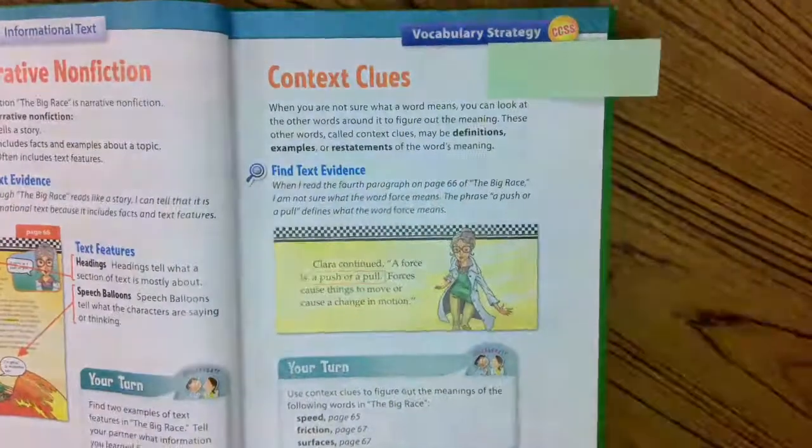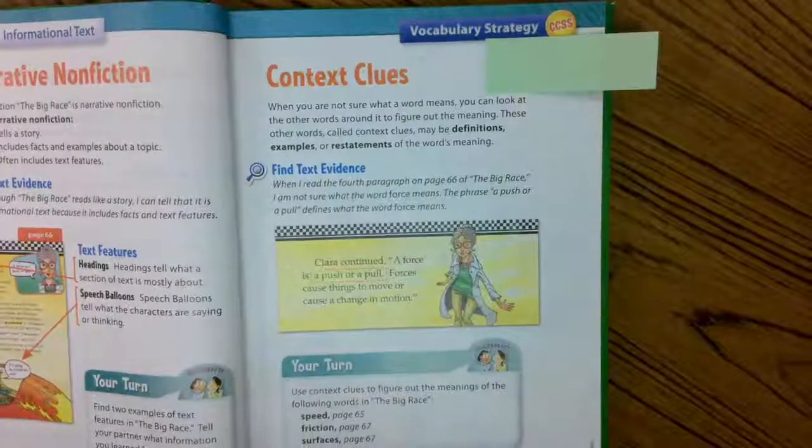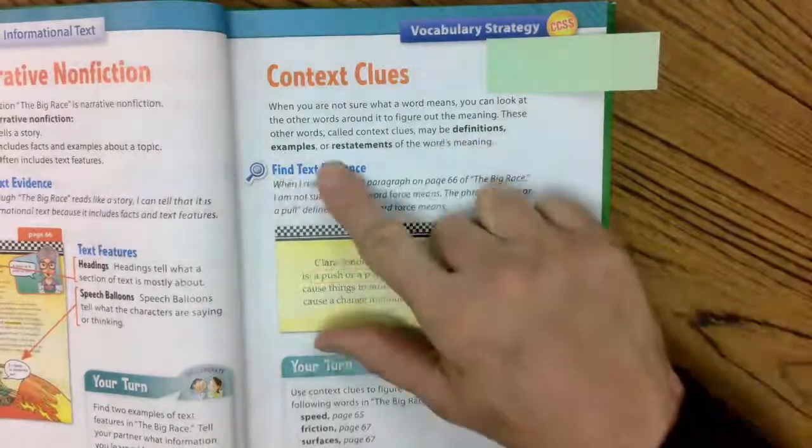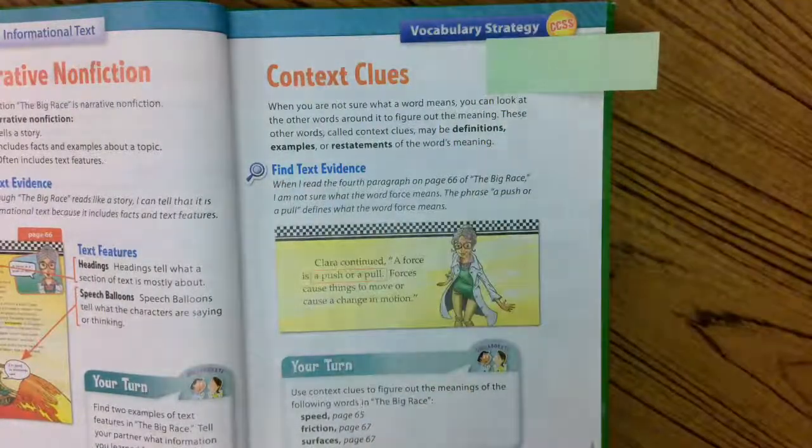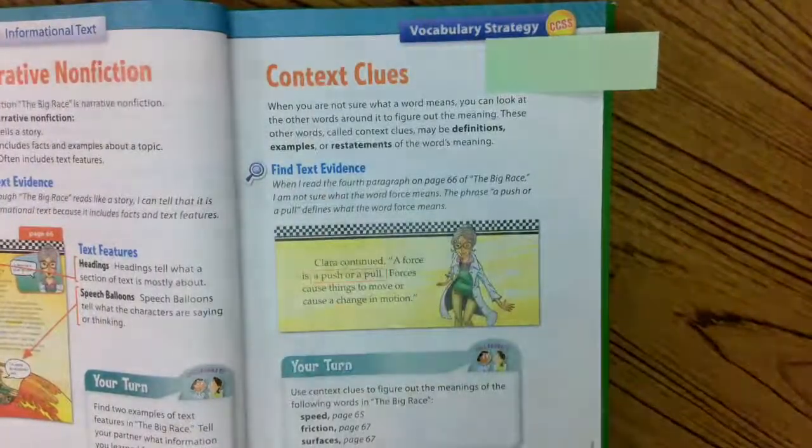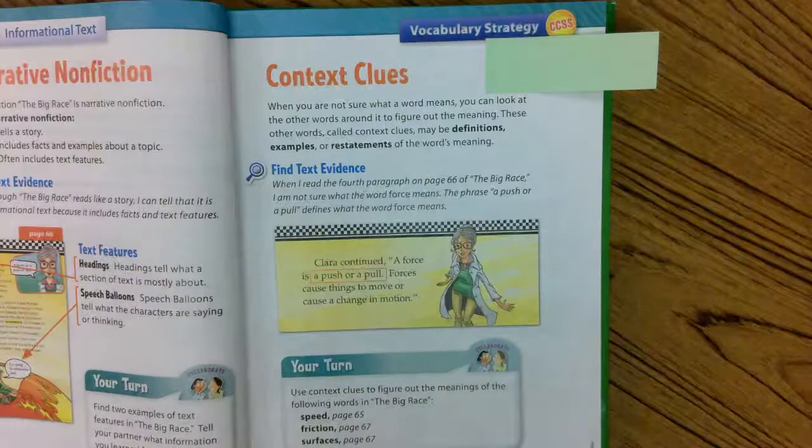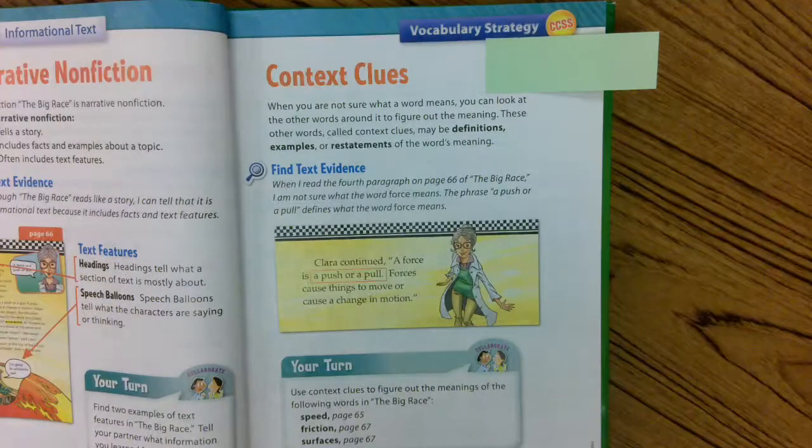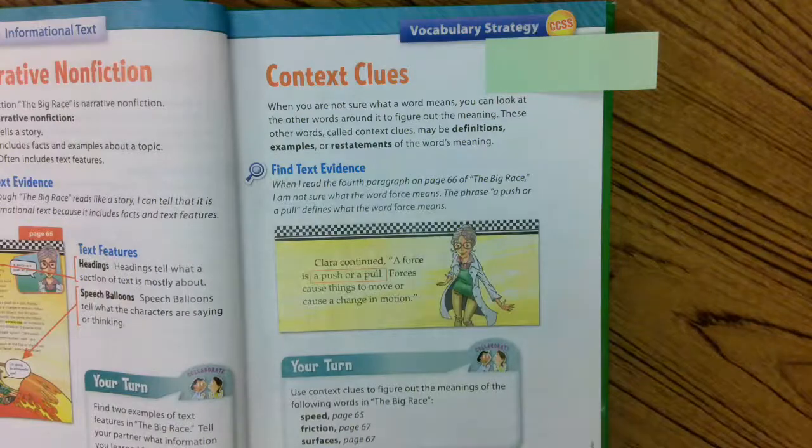Remember my definitions where the key word was 'is.' This is something else. But you can also have examples or restatements of the word's meaning. Let's find some text evidence. When I read the fourth paragraph on page 66 of the big race, I'm not sure what the word force means. The phrase 'a push or a pull' defines what the force means.